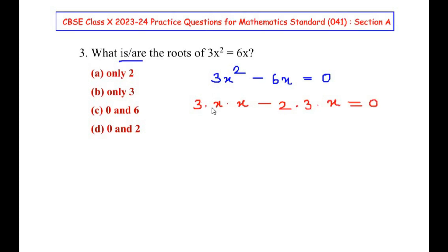Circle out the common factors from these two terms. 3 is a common factor, so let us circle out 3, and x is also a common factor. So we are taking out the common factors, and inside the bracket we write the leftover terms: 3x(x - 2) = 0.